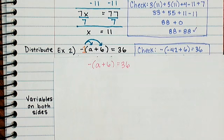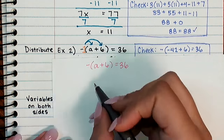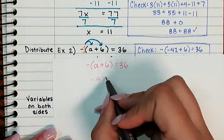And so that trips up people a lot of the time. They think, well, there's no number. I don't have to distribute anything. Isn't that the same as saying minus a plus 6?